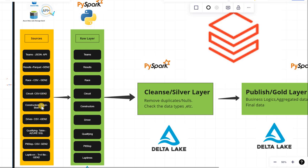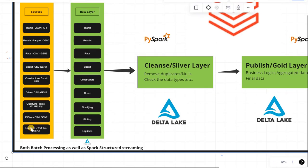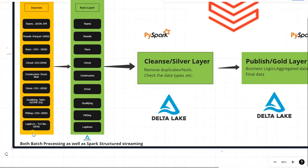Then we have constructor data in Excel format with different sheets, present in Blob Storage, and we will be fetching that data from Blob Storage. Then we have driver CSV, and qualifying data in table format present in Azure SQL. Apart from this, we have pit stop data in CSV format in the Gen2 data lake, and lab times in a TXT file also present in the Gen2 layer.